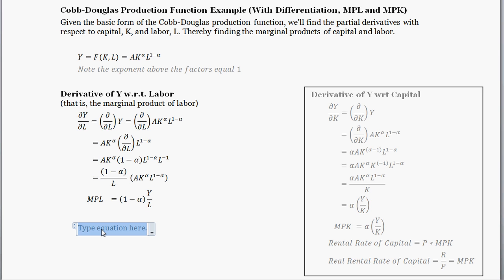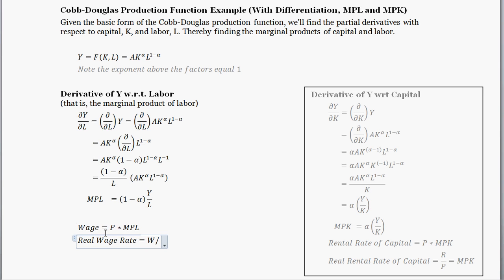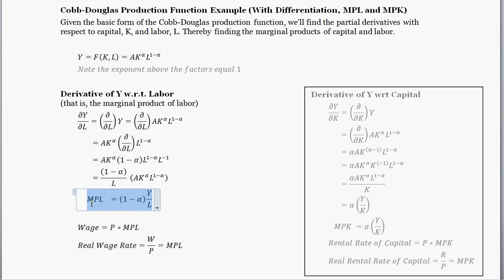This marginal product of labor gets fed into wages. The nominal wage rate equals the price level times the marginal product of labor. The real wage rate — wages adjusted for prices — equals the marginal product of labor. So the first derivative of the production function with respect to labor is pretty useful; it feeds directly into the wage equation. Hopefully this was helpful — let me know if you have any questions, and thanks, have a good day.